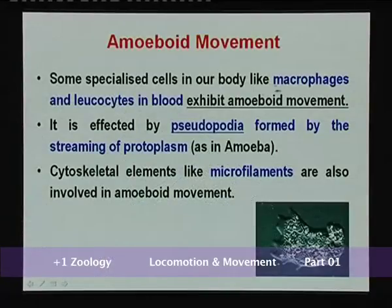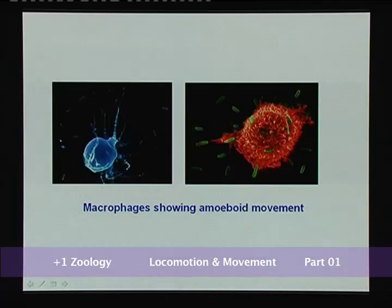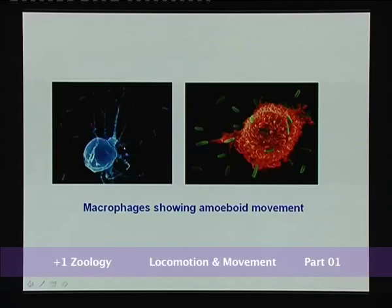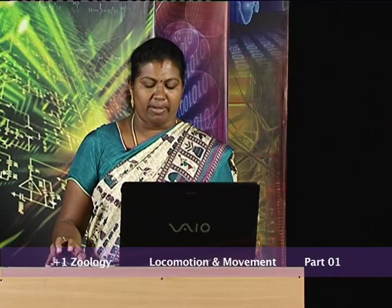Amoeboid movement occurs through pseudopodia formed by the streaming motion of protoplasm, like in the case of amoeba. Cytoskeletal elements like microfilaments are also involved in amoeboid movement. Macrophages put forth pseudopodia and with the help of pseudopodia they phagocytose microbes such as bacteria.